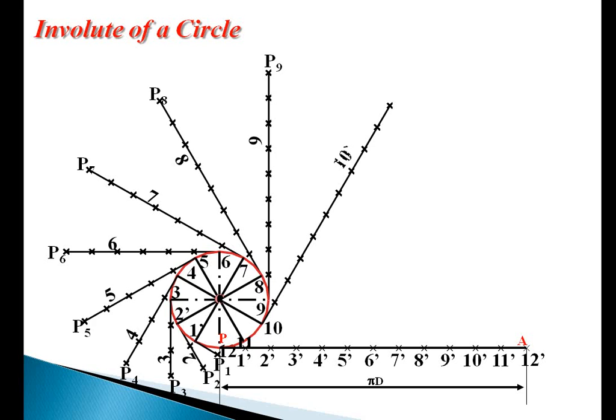Similarly at 4th, 5th, 6th, and 7th, draw lines perpendicular to the respective radial lines. The length of 7P7 equal to P to 7 dash, up to P12 point.